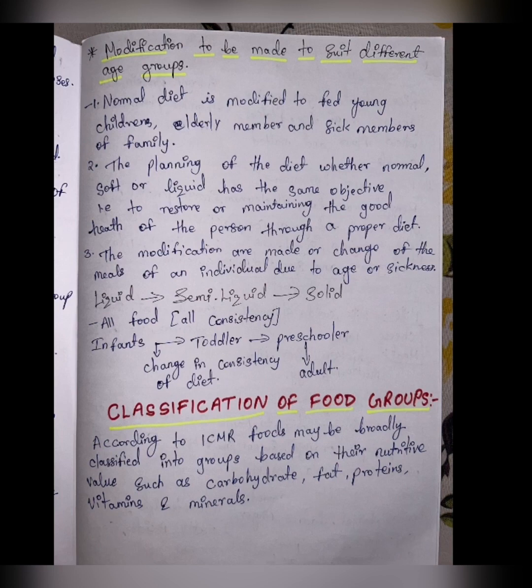Diet consistency ranges from liquid to semi-solid to solid. Infants, toddlers, and preschoolers require different diet consistencies. Preschoolers and adults can have the same diet, but toddlers and elderly people cannot have the same diet as adults, so modifications must be made.